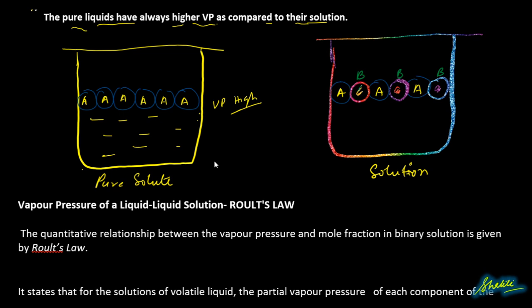Now if we take a solution containing two liquids, A and B, the vapor pressure of A decreases in the solution. When a component becomes part of a solution, its vapor pressure decreases compared to its pure state.